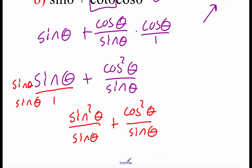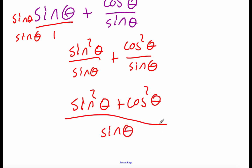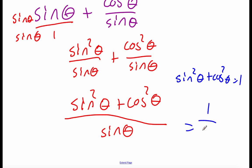It looks like we're adding fractions, and to do that we need common denominators. Right now the sine term is over one, so we multiply top and bottom by sine of theta. That gives us sine squared of theta over sine of theta, plus cosine squared of theta over sine of theta. Now combining into one fraction: sine squared of theta plus cosine squared of theta all over sine of theta. That's our Pythagorean identity on top, which equals one — so we get one over sine of theta, which by the reciprocal identity is cosecant of theta.